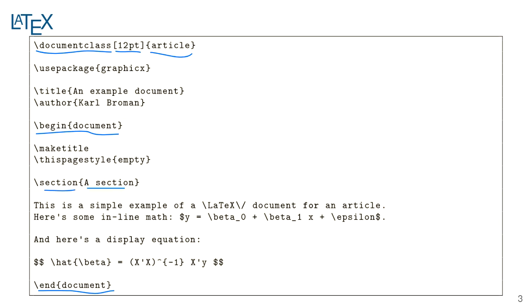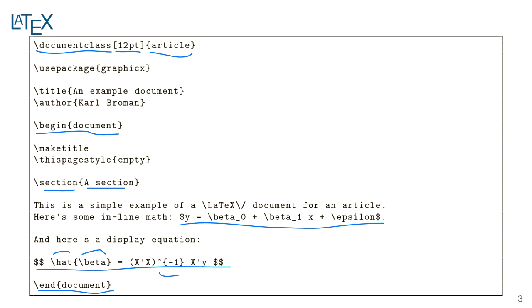A main selling point for LaTeX has been its simple system for creating equations — super flexible for making basically any kind of math equation you want, including inline equations. Double dollar signs indicate display equations where you can get superscripts, hats on top of Greek letters — everything you might want to do.